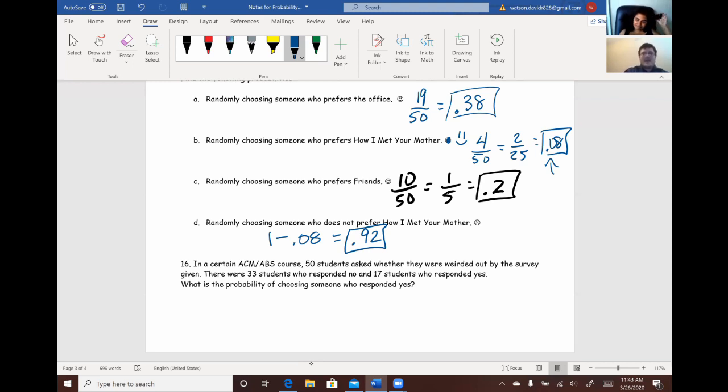All right. So, if we want to find students who responded yes, then we know that there's 17 that responded yes. So, we take 17 that have the outcome that we want over 50 total. Convert that to a decimal and it's going to be 0.34. And that's our answer. All right. Well, stay tuned for our next videos with the rest of the survey results. I have a lot weirder of questions.